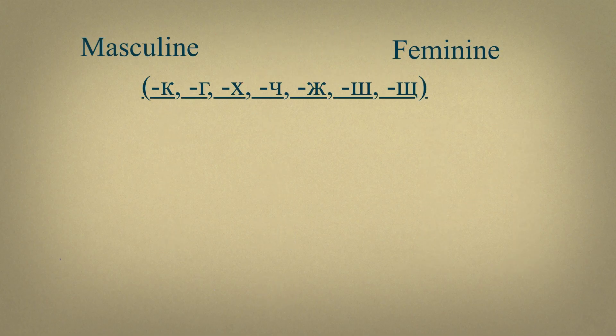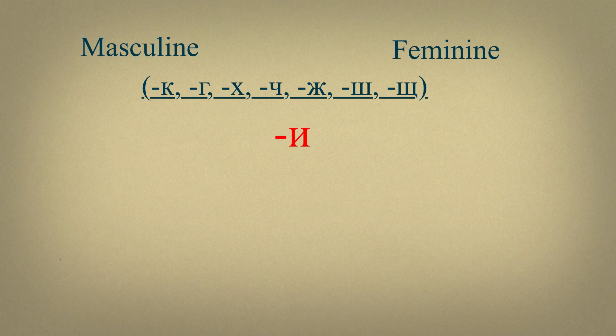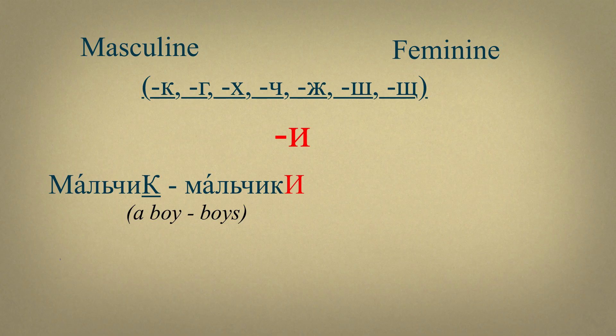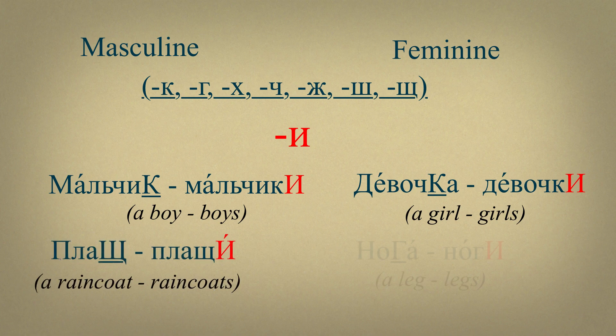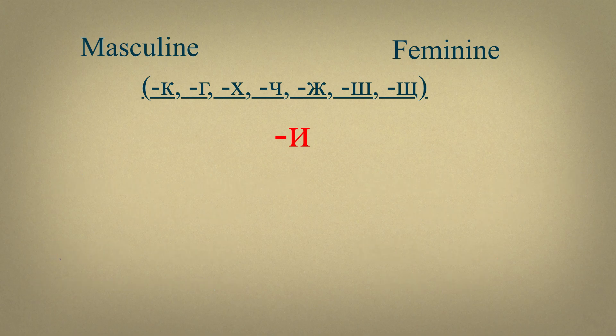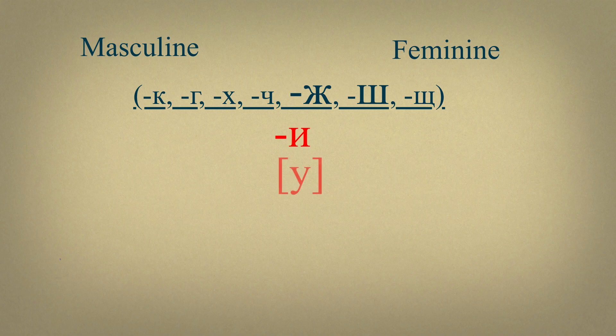So, nouns of masculine and feminine genders which stems end with К, Г, Х, Ч, Ж, Ш, and Щ, in plural form have an ending И. For example, мальчик, мальчики, девочка, девочки, плащ, плащи, нога, ноги. After letters Ж and Ш, the letter И is pronounced as Ы.